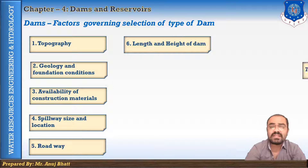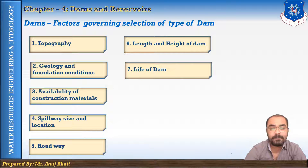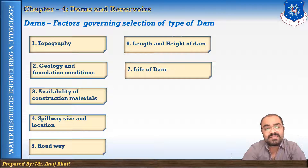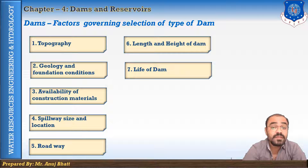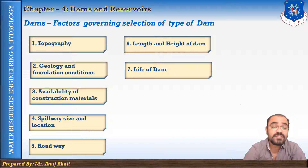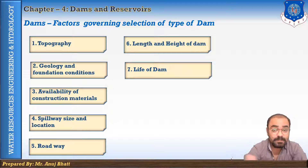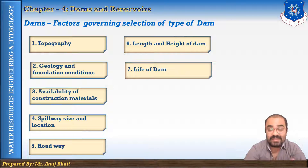The next factor is the life of the dam. Concrete or masonry gravity dams have a very long life, while earth and rock-fill dams have intermediate life. For temporary structures, timber dams are sometimes used. Timber dams are adopted only for temporary storage and their life is very low.